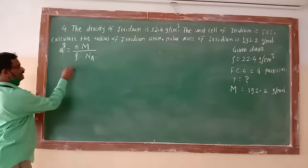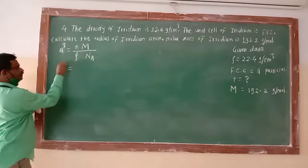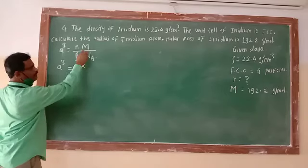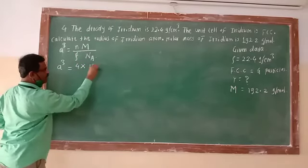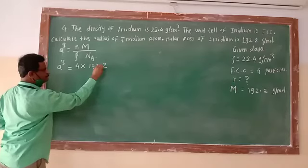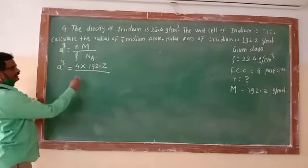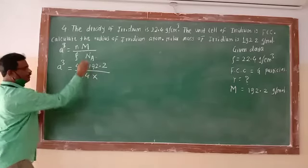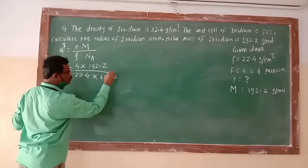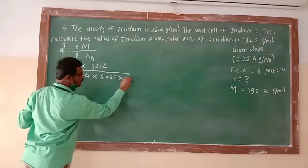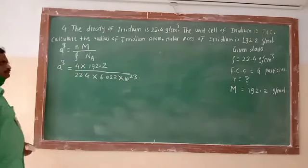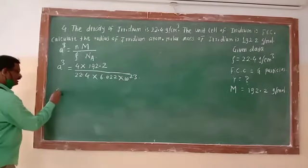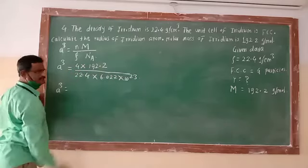Let us substitute the values. a³ equals n (number of particles) = 4, multiplied by molar mass M = 192.2, divided by density 22.4, multiplied by Avogadro's number 6.022 × 10²³.